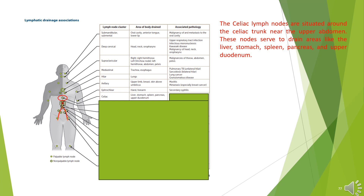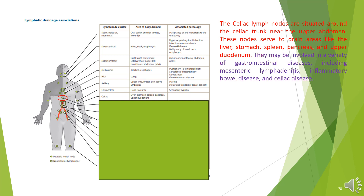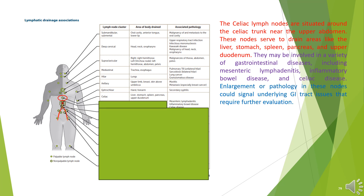Celiac lymph nodes. The celiac lymph nodes are situated around the celiac trunk near the upper abdomen. These nodes serve to drain areas like the liver, stomach, spleen, pancreas, and upper duodenum. They may be involved in a variety of gastrointestinal diseases, including mesenteric lymphadenitis, inflammatory bowel disease, and celiac disease. Enlargement could signal underlying GI tract issues requiring further evaluation.